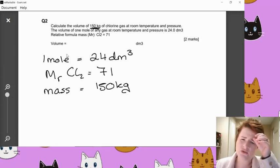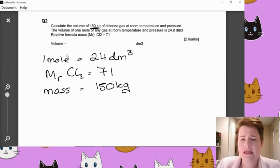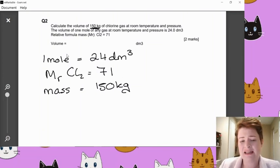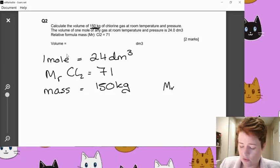So key information it's given us in the question. We've got 150 kilograms of chlorine gas at room temperature and pressure. The volume of one mole of any gas at room temperature and pressure is 24 decimetre cubed. So let's just make a note of one mole equals 24 decimetre cubed. And it's told us the relative formula mass for Cl2 is 71. And we've got a mass of 150 kilograms.